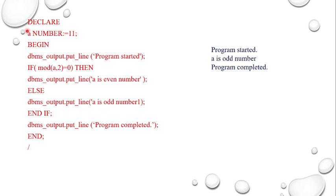We can write the program like this: DECLARE a number := 11; BEGIN DBMS_OUTPUT.PUT_LINE('Program started'); IF MOD(a, 2) = 0 THEN DBMS_OUTPUT.PUT_LINE('a is even number'); ELSE DBMS_OUTPUT.PUT_LINE('a is odd number'); END IF; DBMS_OUTPUT.PUT_LINE('Program completed'); END; — When input is 11 it prints 'a is odd number'. If we change to 12, the answer will be 'a is even number'. This is a simple program for printing odd or even numbers using IF-THEN-ELSE.